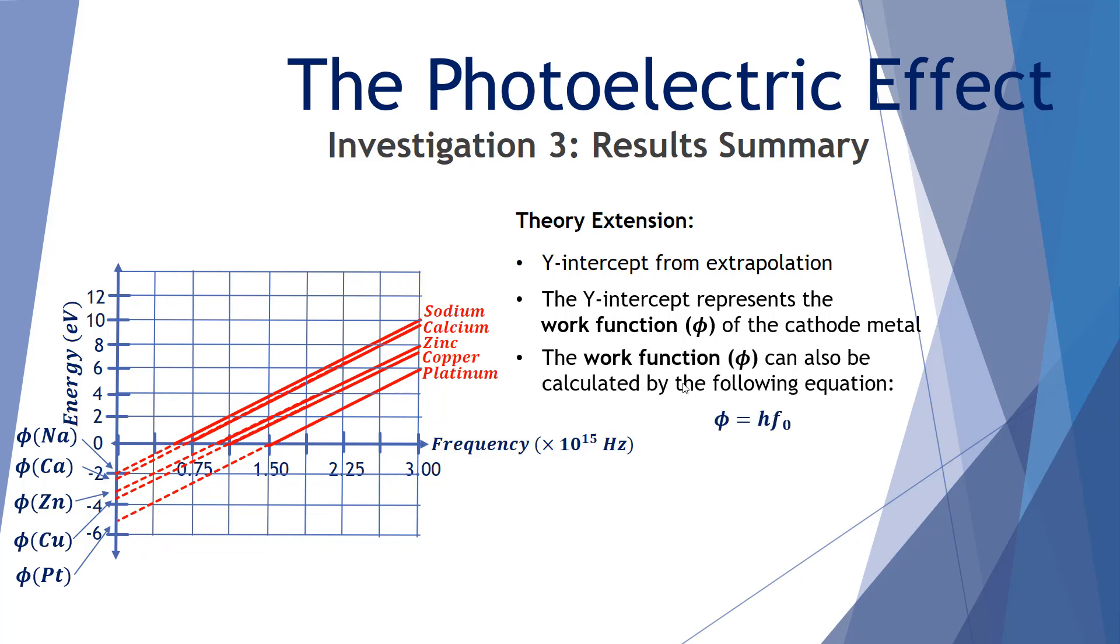The work function can also be calculated by the following equation, where phi, the work function, is equal to Planck's constant times the threshold frequency. Of course, we want our work function to be calculated in joules. We use the Planck's constant that involves joule seconds. And if we want the work function to be calculated in electron volts, we use the Planck's constant that's measured in electron volt seconds. And here's a sample collection of work functions in electron volts.